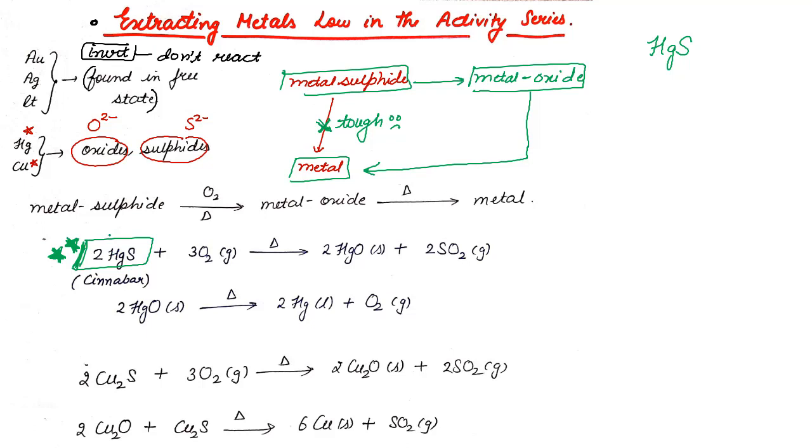Since it is a sulfide ore, I told you direct conversion is not possible. So first you have to heat it with oxygen. Provide a little bit of temperature, it gets converted to HgO. And the sulfur reacts with oxygen and goes out as sulfur dioxide.